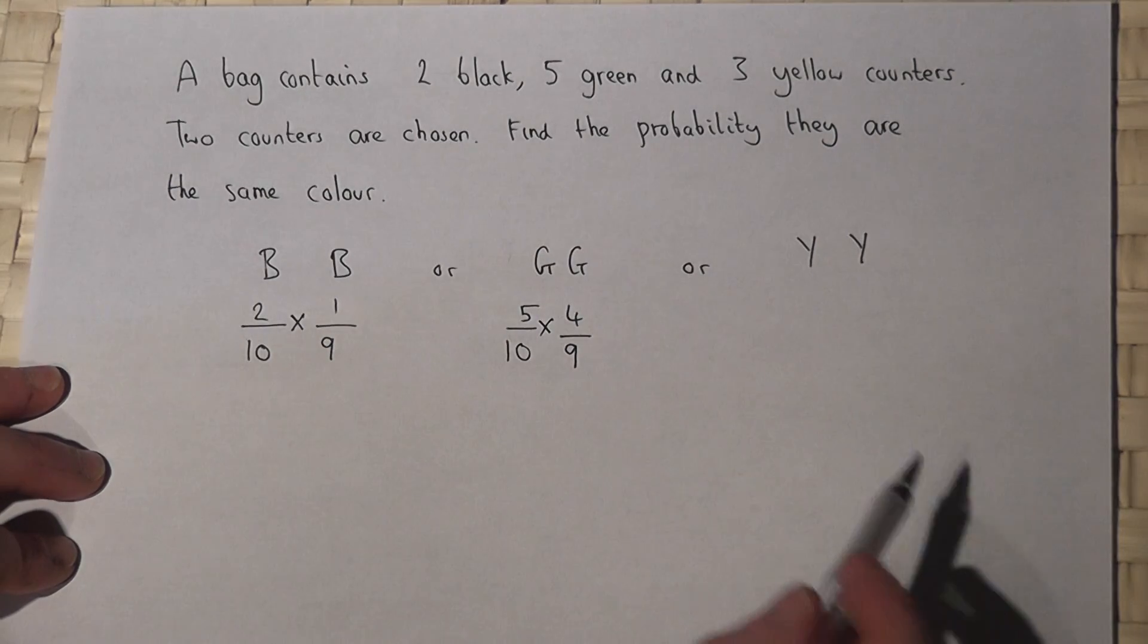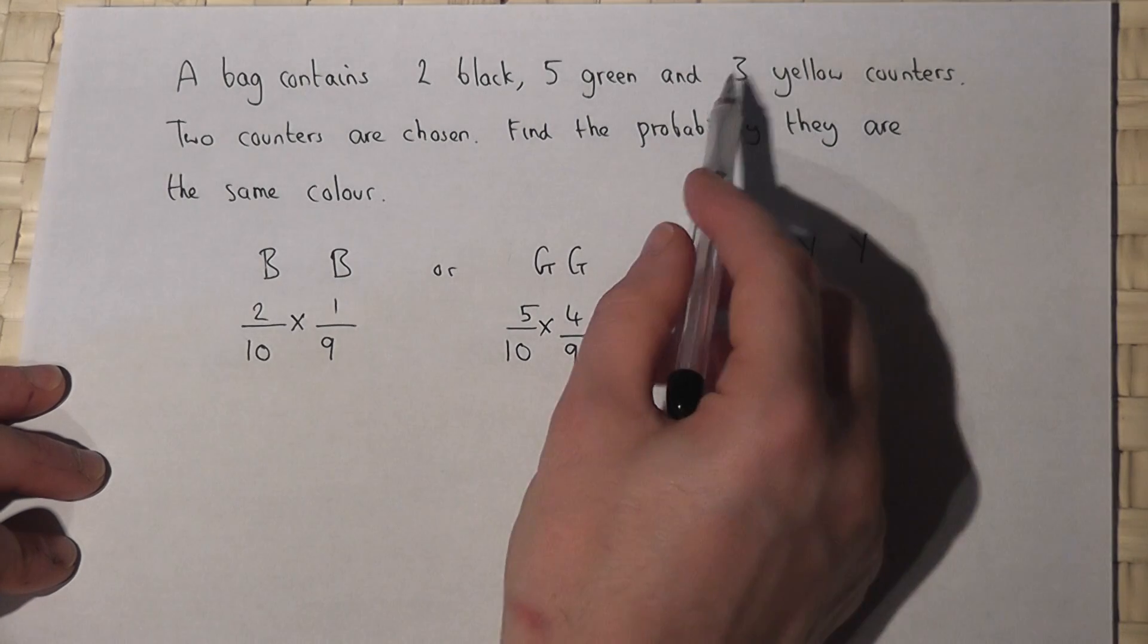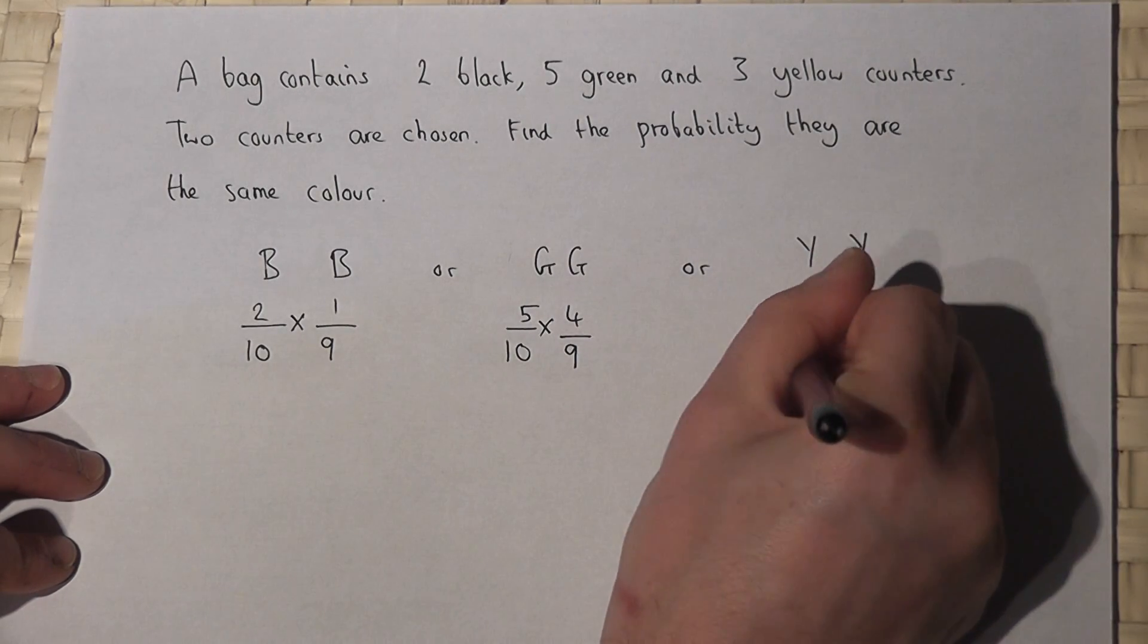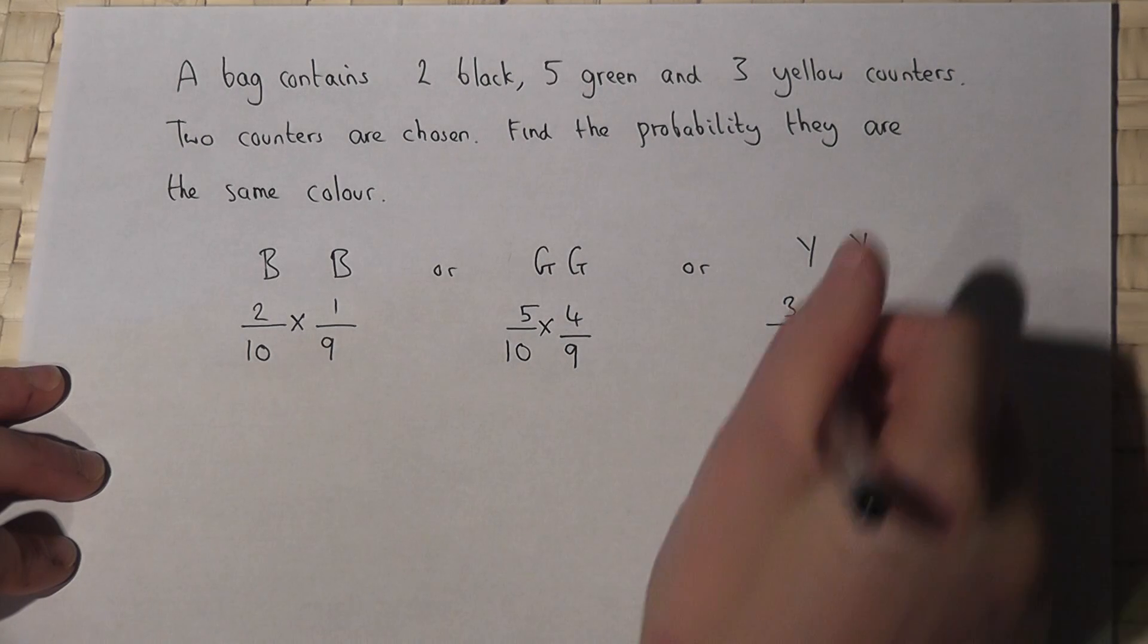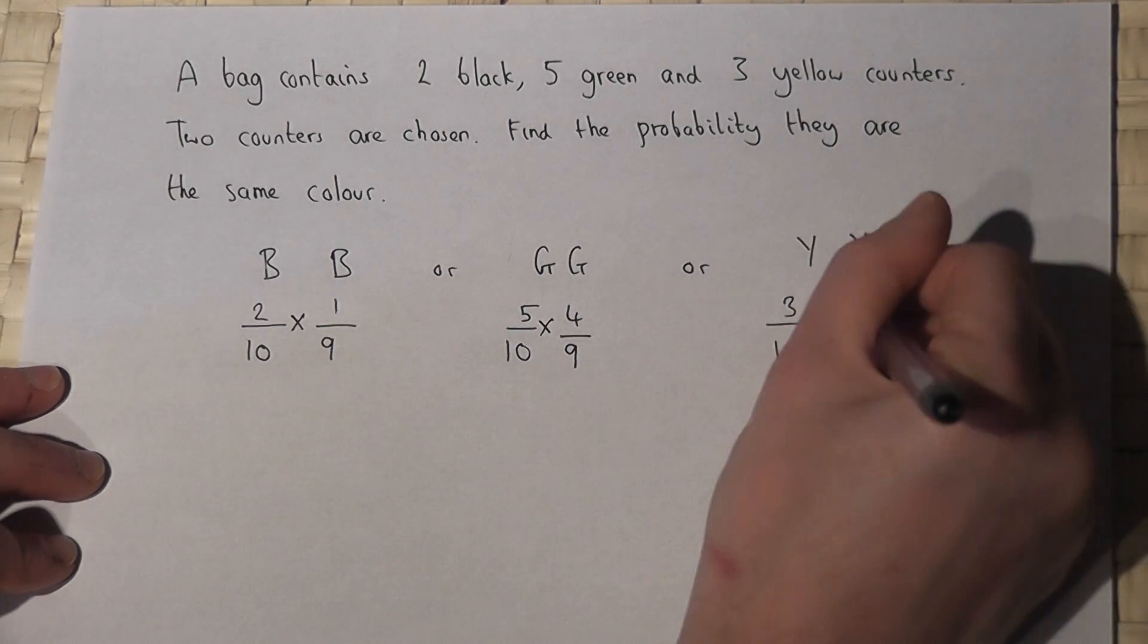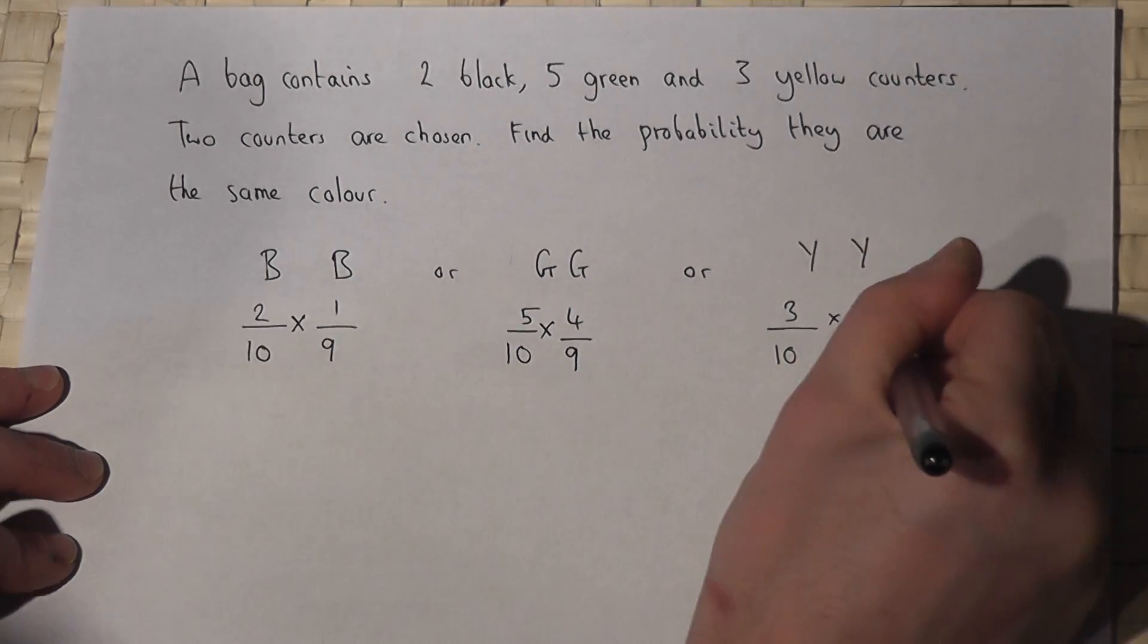Then yellow yellow, when you first go in three out of ten. Then for the second yellow counter again one less so two out of nine.